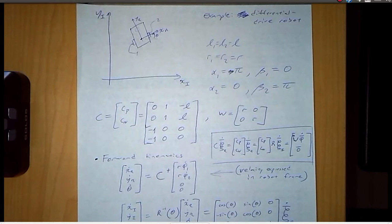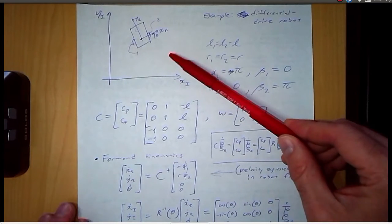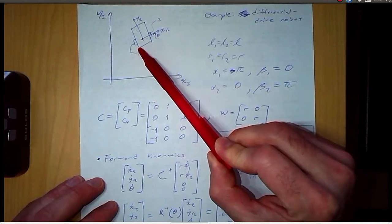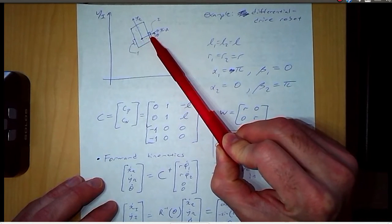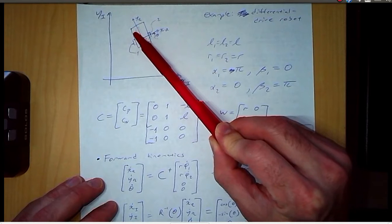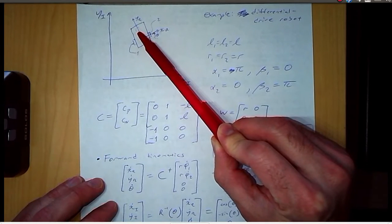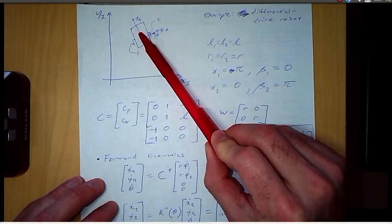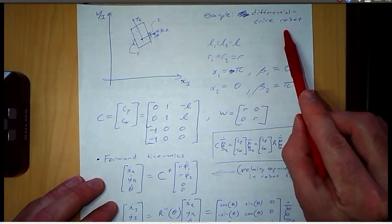We'll use the constraint equations to develop a forward kinematic solution and an inverse kinematic solution for this example robot. We have a robot chassis with two fixed standard wheels and one spherical wheel, or a caster wheel, and this wheel imposes no constraints on the motion of the robot. This is known as a differential drive robot.